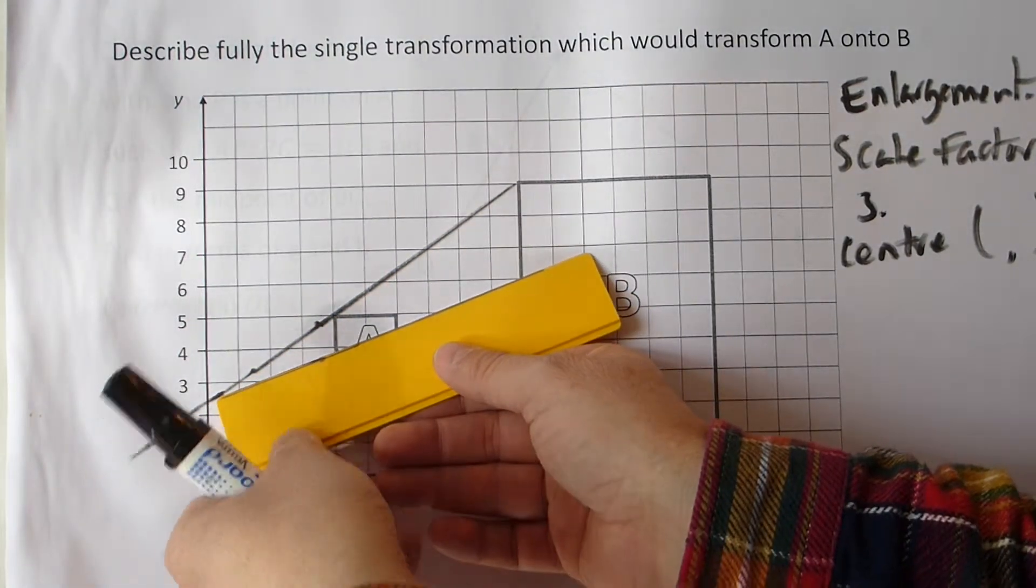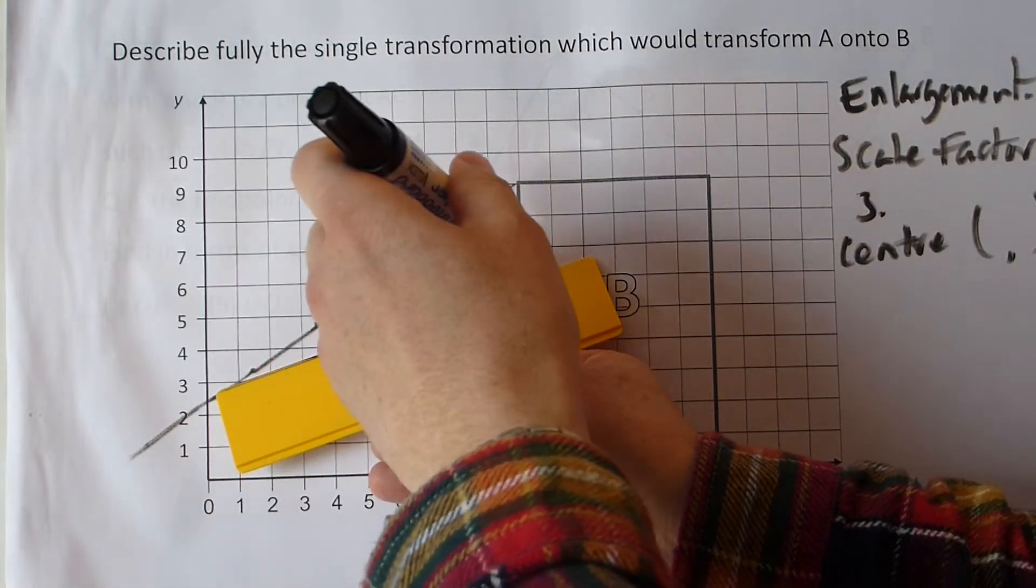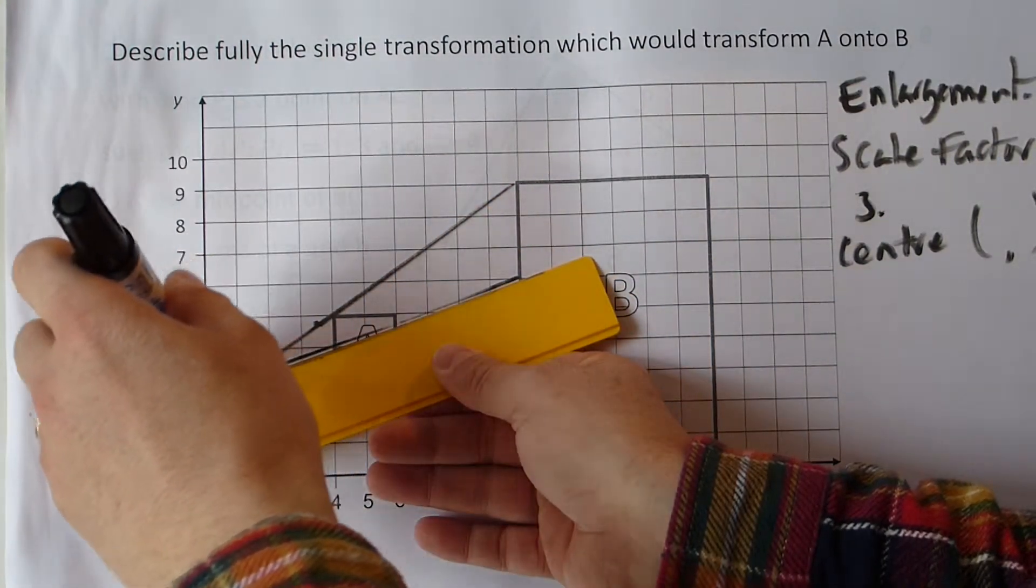We're going to have to do it once more. So we join point up to point and extend that line down.